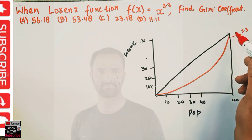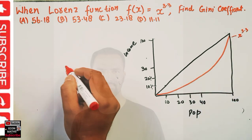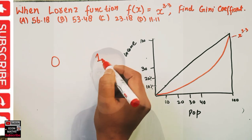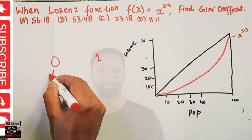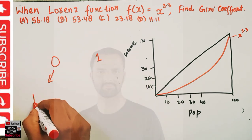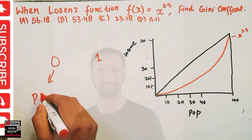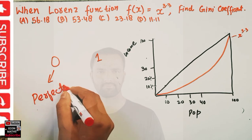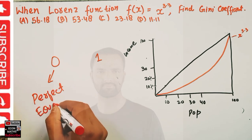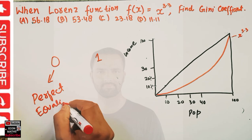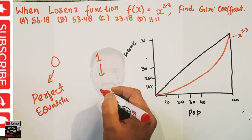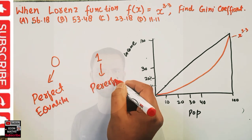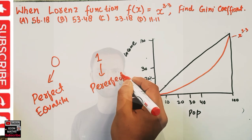Remember, the Gini coefficient lies between 0 and 1. Zero represents perfect equality, and one represents perfect inequality.